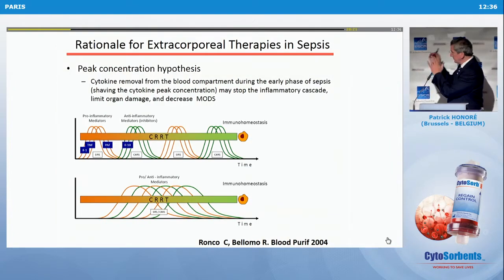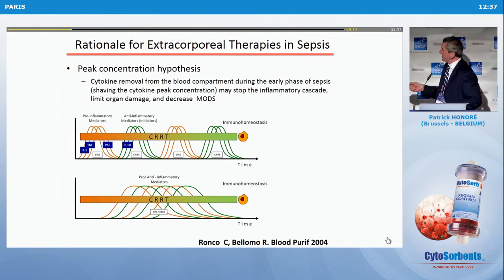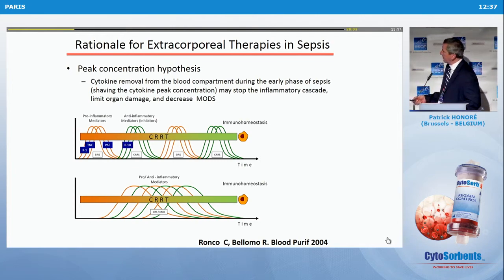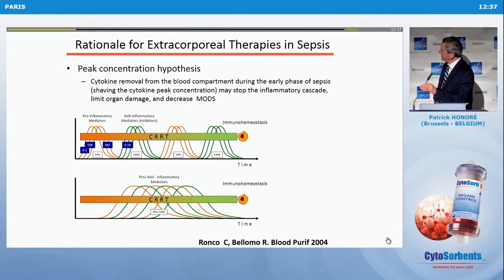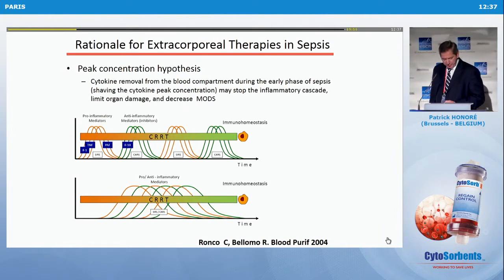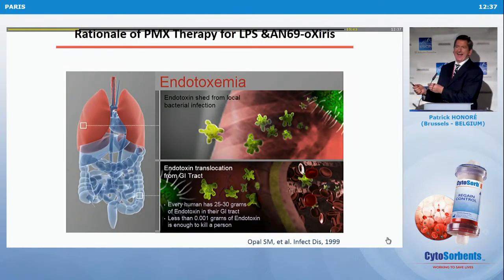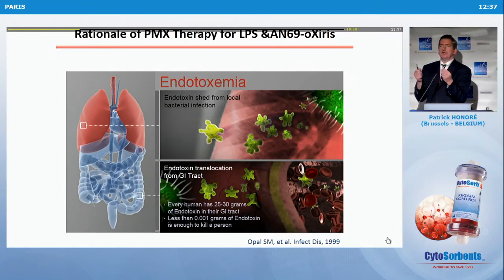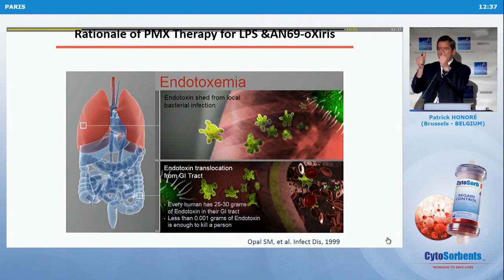What is the biologic rationale? The peak concentration hypothesis: during sepsis, you have peaks of pro-inflammatory and anti-inflammatory mediators, and you try to cut down the peak to decrease the blood concentration of mediators in the bloodstream and hopefully improve organ failure and perhaps survival. One of the good examples is endotoxin — it's a very good rationale. It's simple: one single target, and it's very robust.